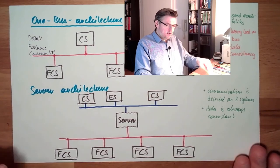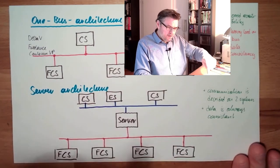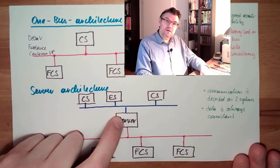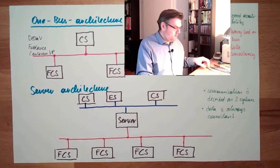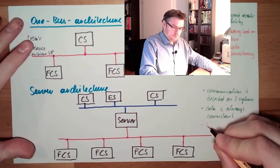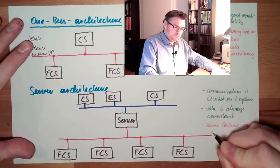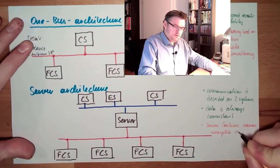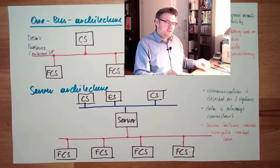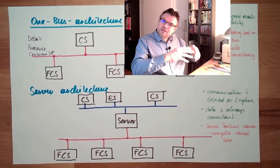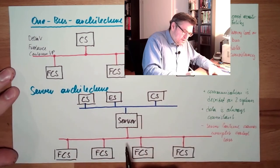Now the big downside of the server architecture: if the control stations fail, they fail; if the field control stations fail, they fail; but if the server fails, then the whole architecture is no longer working — complete control loss. This is actually the big downside, and also the reason centralized systems got decentralized. Usually there are redundancy concepts with backup servers in the background.